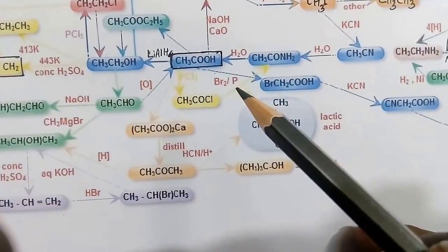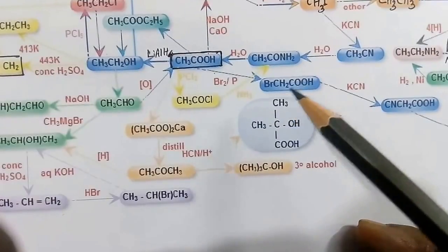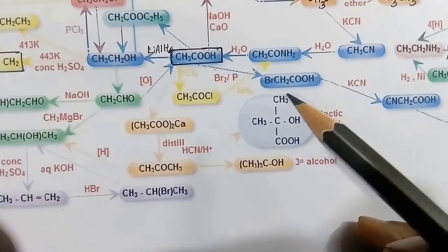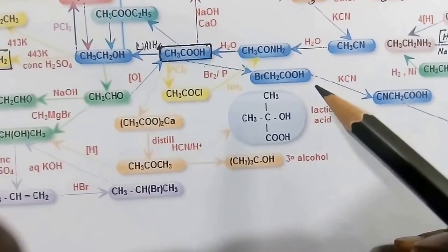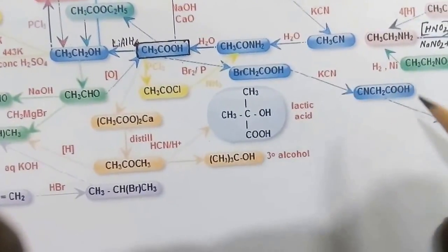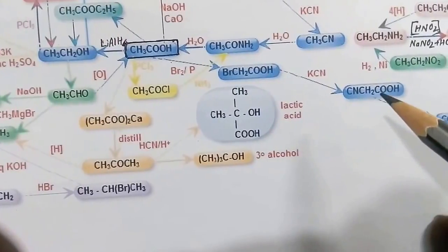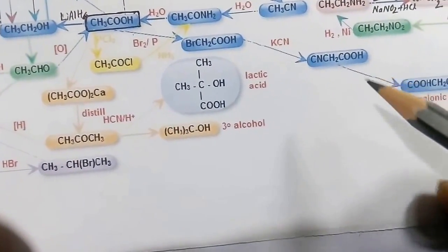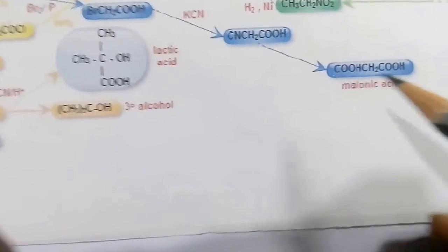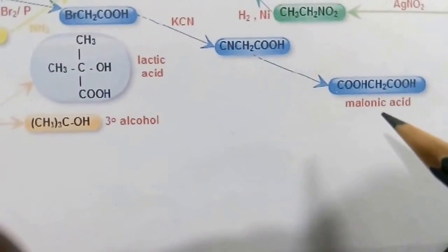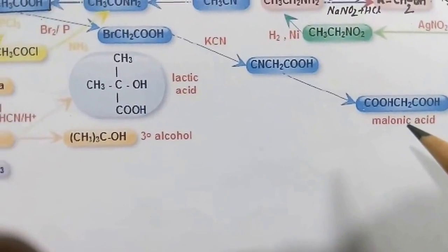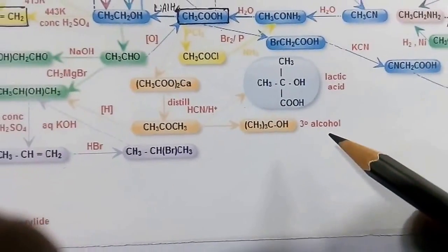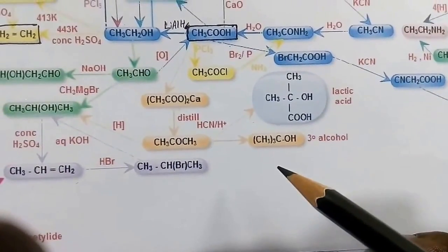Another important compound is acetic acid. Acetic acid treated with Br₂ and red phosphorus gives 2-bromoacetic acid (monobromoacetic acid). That is then treated with KCN, giving cyanoacetic acid. When hydrolyzed, we get malonic acid.